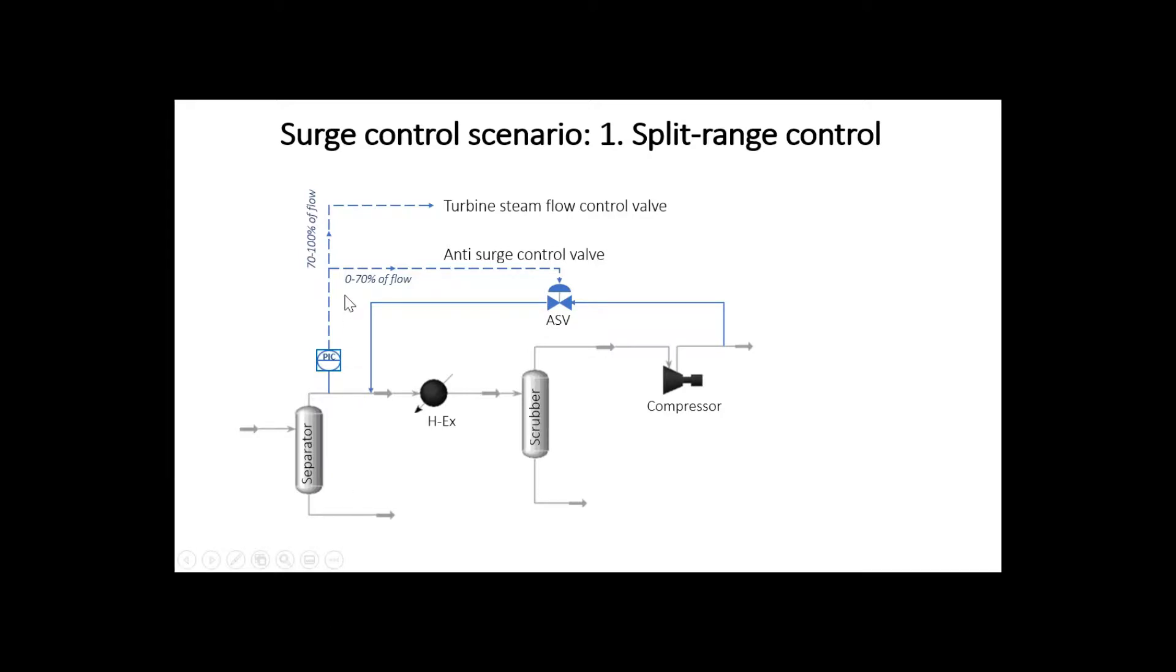Here we can see split signals. To some point, for example, in this case till 70% of flow decrease, the control system changes the compressor speed. Here in order to do so, it decreases the steam flow rate to the compressor turbine.